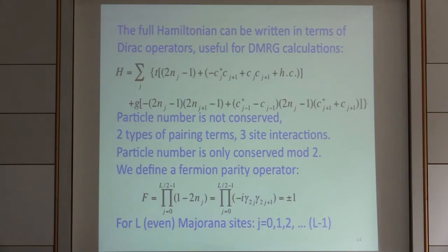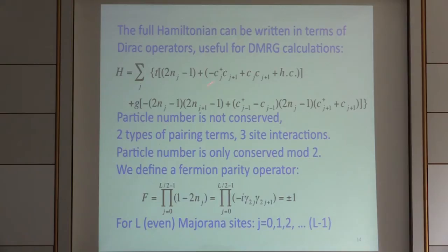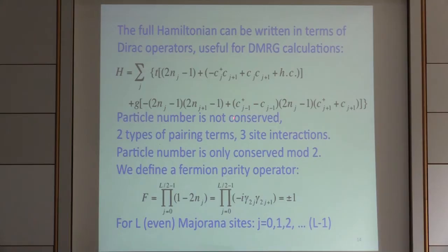If you have trouble getting intuition about Majorana fermions, we can always write the Hamiltonian in terms of Dirac fermions by arbitrarily combining pairs of Majoranas. We get a nearest-neighbor repulsion term, a chemical potential term, and a hopping term for Dirac fermions. But the other interaction term is rather nasty — it involves three lattice sites, a second-neighbor hopping term whose sign depends on the occupancy of the intermediate site, and a pairing term. This Hamiltonian does not conserve particle number.